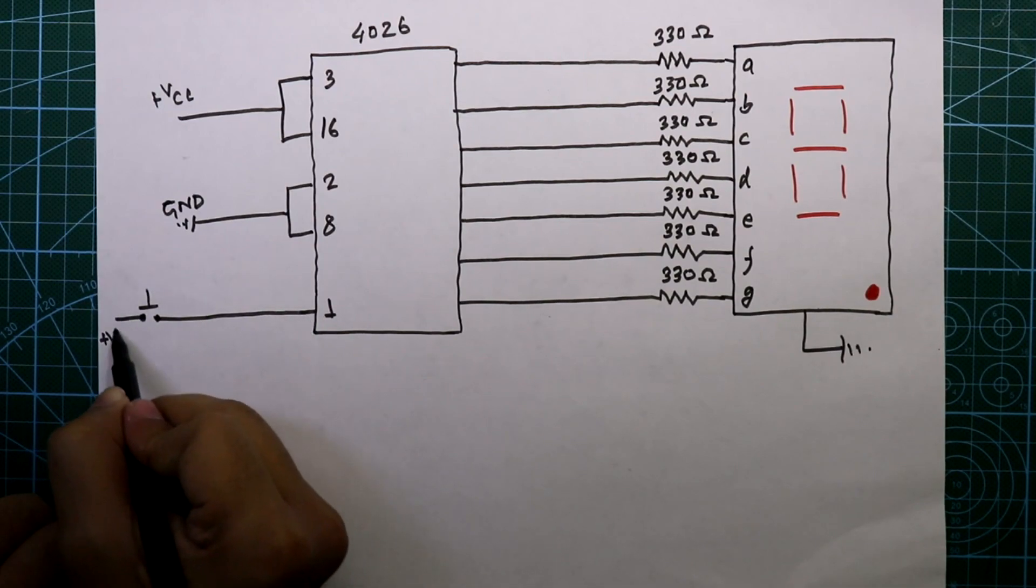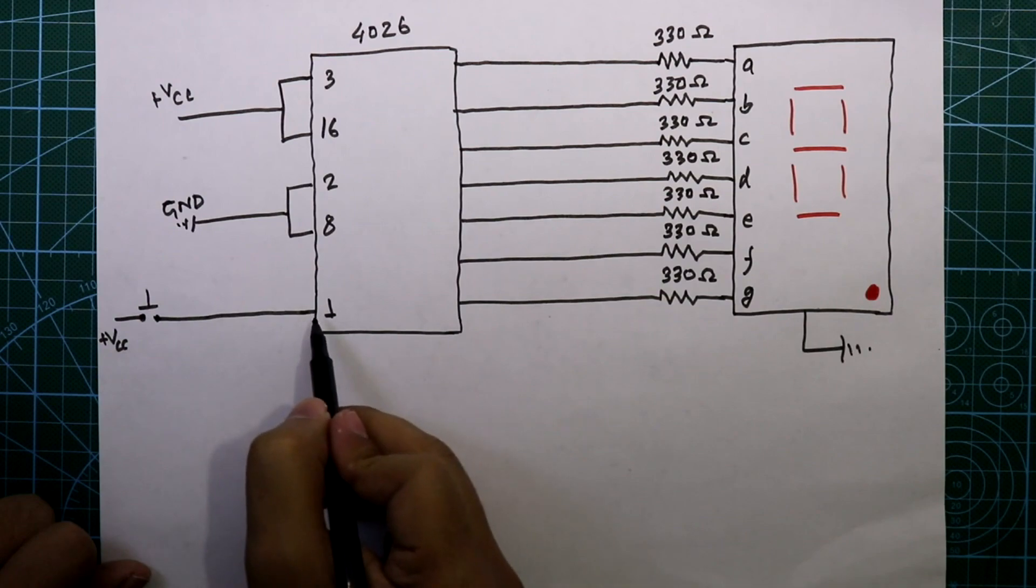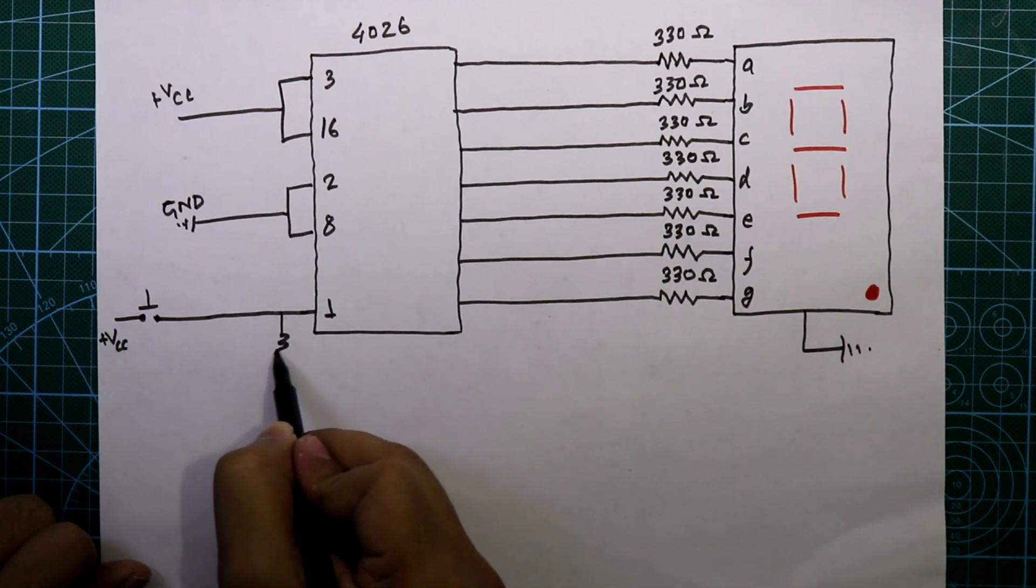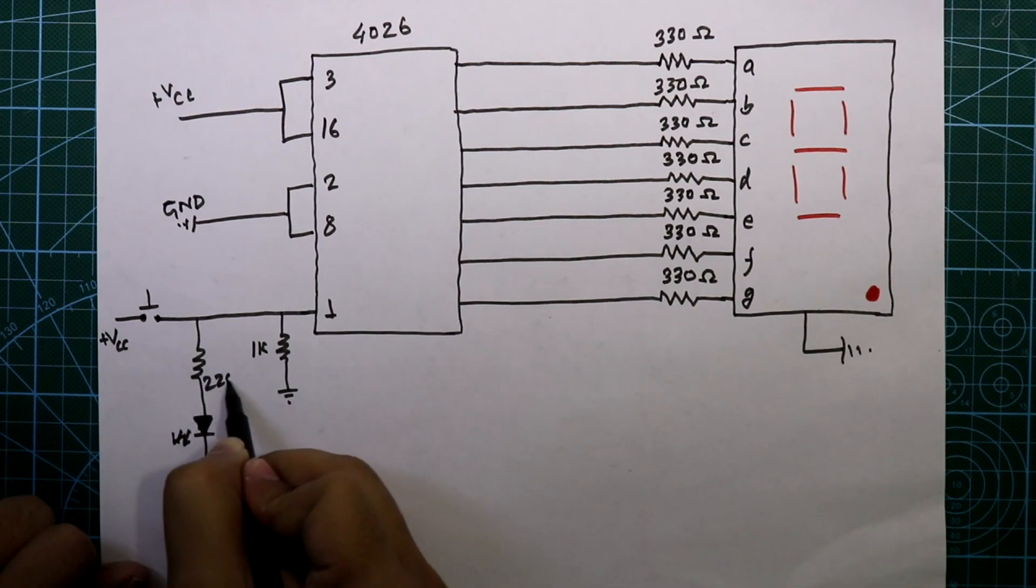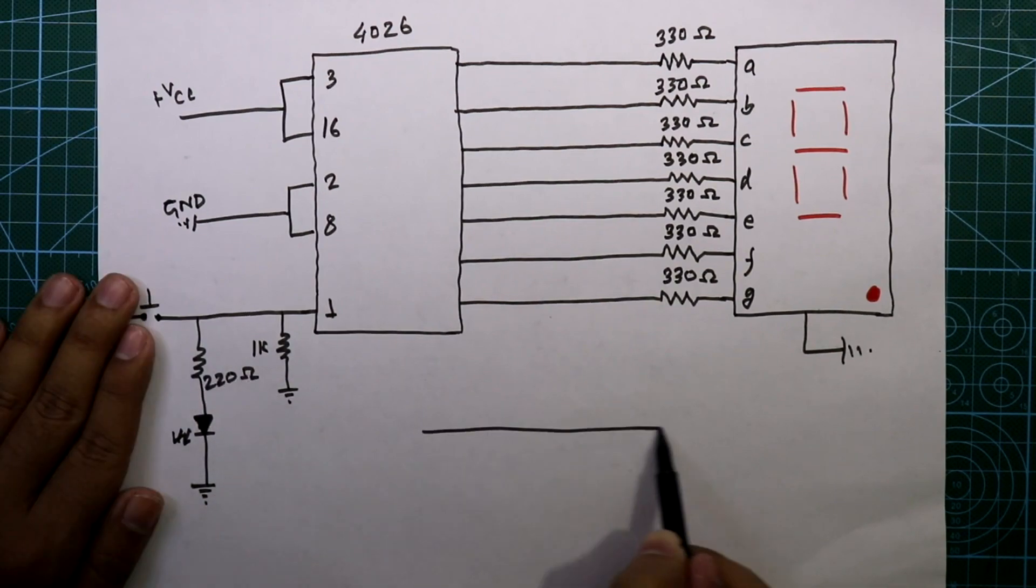And we have to connect another resistor and LED, and the value is 220 ohms.